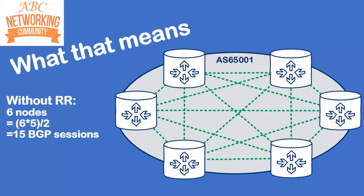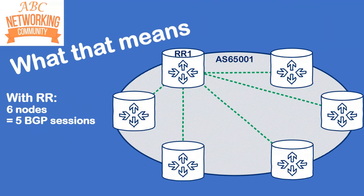What does this mean? In an iBGP network with six nodes, without route reflectors you would need 15 BGP sessions for a full mesh. With a route reflector, because it reflects prefixes between clients and non-clients, nodes only have to peer with the route reflector. With six nodes you only need five BGP sessions — a dramatic reduction in configuration overhead. The relative savings increase the more nodes you have.